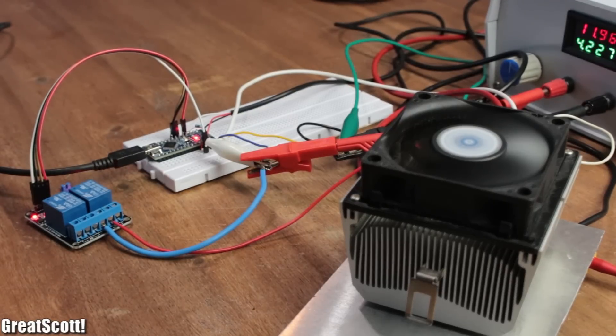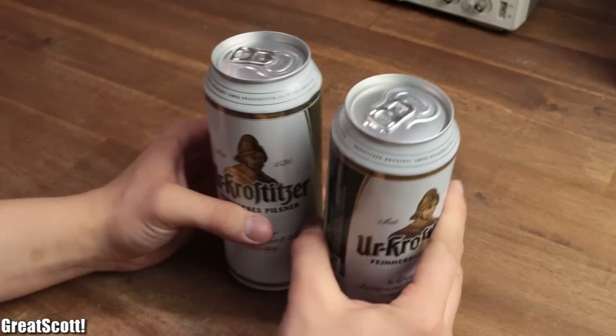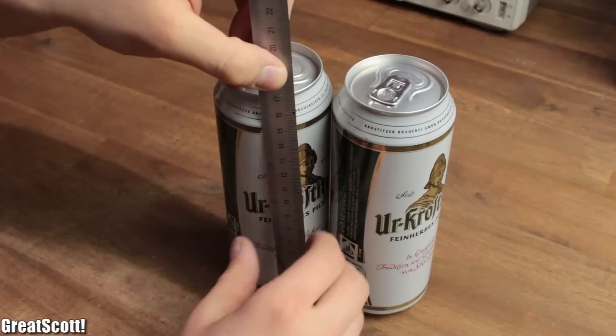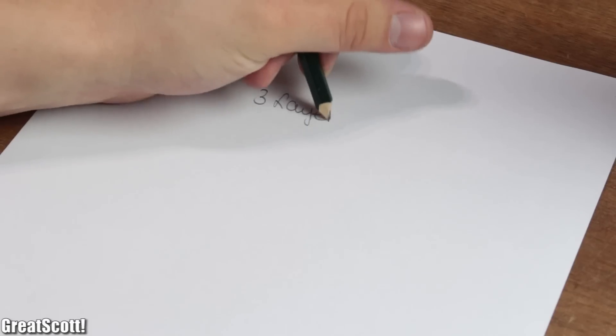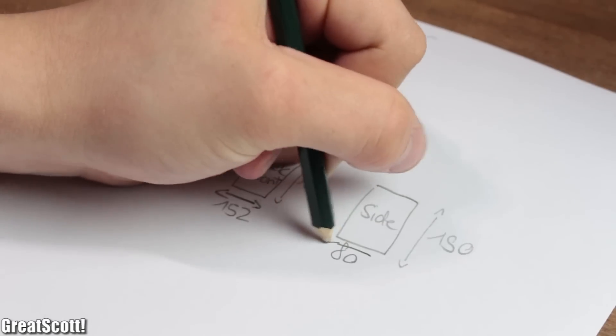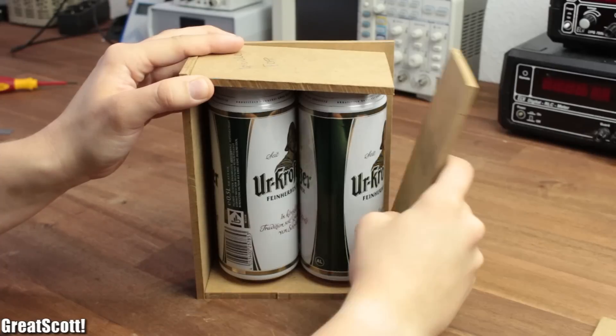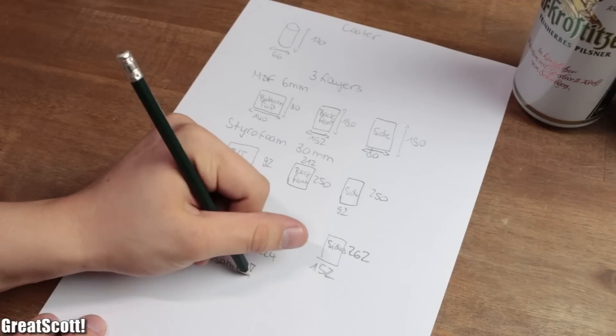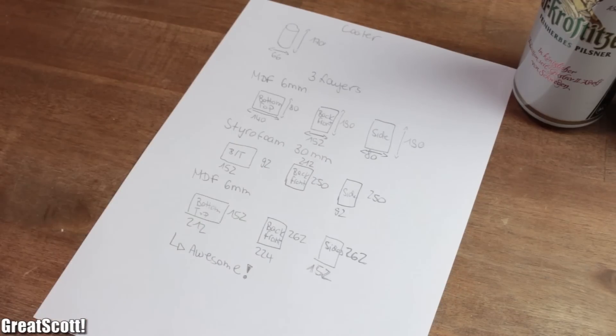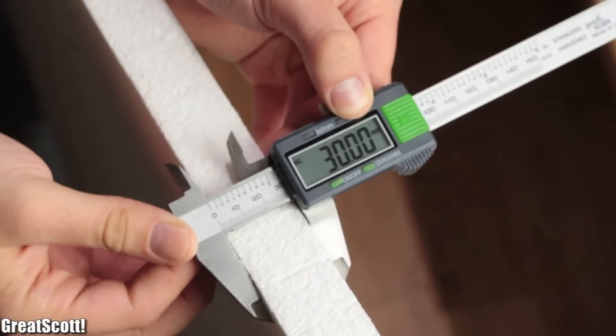Once I was sure everything worked fine, it was time to plan the awesome case. I measured the dimensions of my two cans and came up with a three-layer design, which uses an inner and outer layer of 6mm MDF and a middle layer of 30mm styrofoam. It's a bit of an overkill, but it worked well in the end, which is the main point.